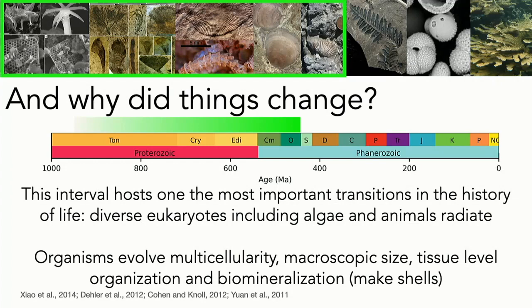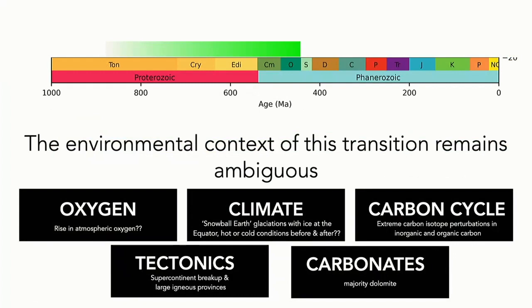In this interval we see organisms making skeletons out of apatite, large algal fossils, and the first organisms making skeletons out of calcium carbonate — macroscopic soft-bodied organisms populating all environments from deep to shallow water. Not only do we see a size change, but also a shift to multicellularity, tissue-level development of processes like digestion and biomineralization — the ability to make shells. And yet the environmental context of this transition remains ambiguous. Key aspects of the history of oxygen, climate, the carbon cycle, and tectonics on our planet remain unresolved.